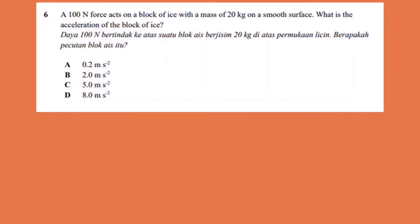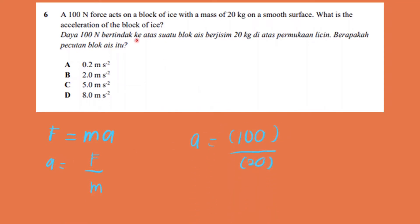To help you understand Newton's second law of motion, let's answer a question together. The question states that a 100 N force acts on a block of ice with a mass of 20 kilograms on a smooth surface. What is the acceleration of the block of ice? We write out the formula F equals to ma, rearrange for acceleration, plug in 100 N and 20 kg, and we get the answer 5 metres per second squared, which is C.